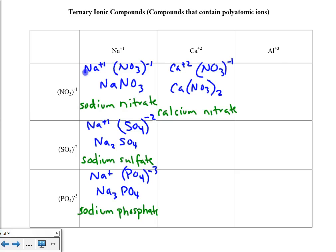The next example: Ca⁺² and sulfate minus 2. If we crisscross, you might think you get Ca₂(SO₄)₂, but since the charges cancel out, the overall neutral compound is written as CaSO₄. The parentheses drop because we only need one of those sulfates. This is calcium sulfate.